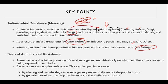Now if we talk about AMR, what is the basis? Generally, some bacteria due to the presence of resistance genes - certain genes on those bacteria which are intrinsically capable - can develop AMR, antimicrobial resistance. This is one way to develop AMR. Another way bacteria can also acquire this AMR can happen in two ways.